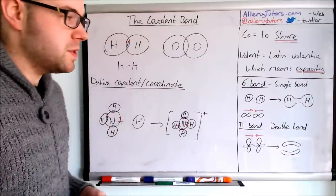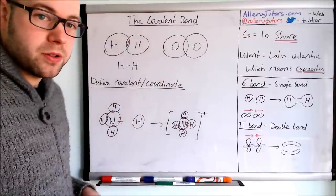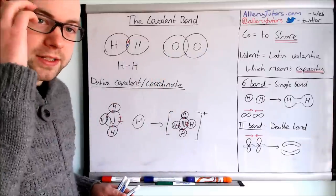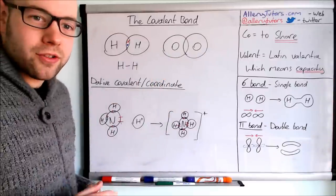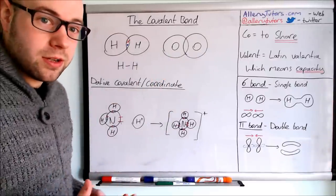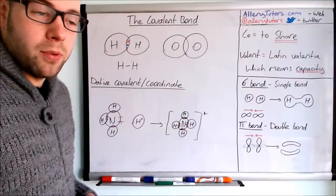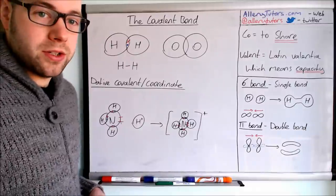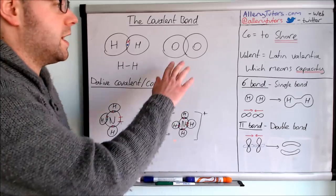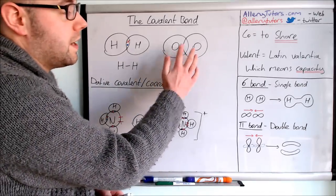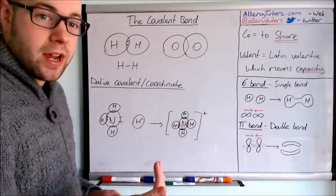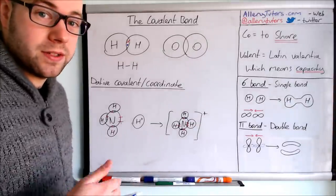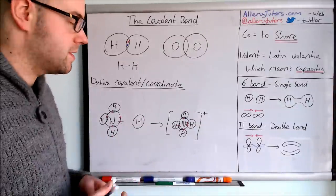Sometimes bonds need to be double or triple bonds. In this case, oxygen has six electrons in its outer shell and needs two more to become energetically stable, so it needs to share two electrons from each atom. Remember, the sharing of a pair of electrons is what makes a covalent bond — make sure you include the word 'pair'.